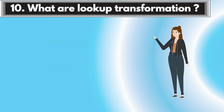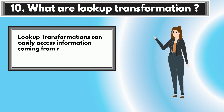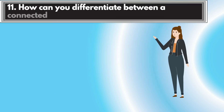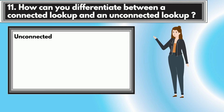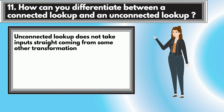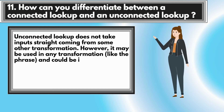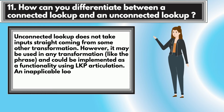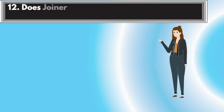Question 10: What is Lookup Transformation? Lookup transformations can easily access information from relational tables that are not sourced in the mapping. Question 11: How can you differentiate between a connected lookup and an unconnected lookup? An unconnected lookup does not take input directly from any other transformation; however, it may be used in any transformation as an expression and can be implemented as a function using LKP expression. An unconnected lookup can be called multiple times in a mapping.